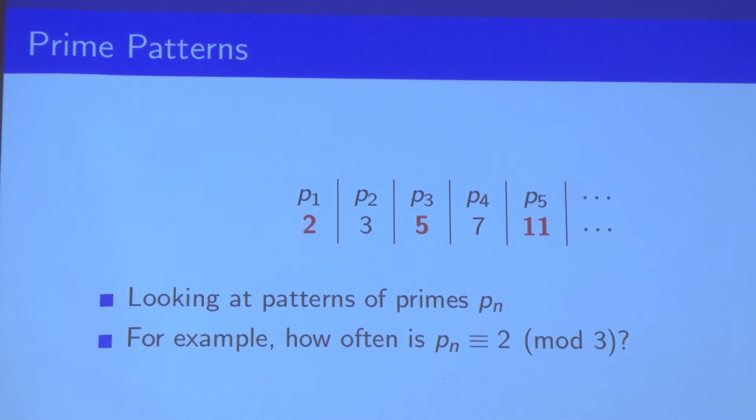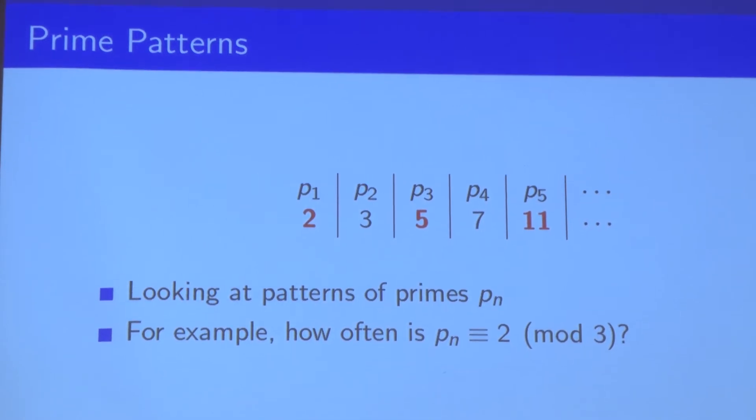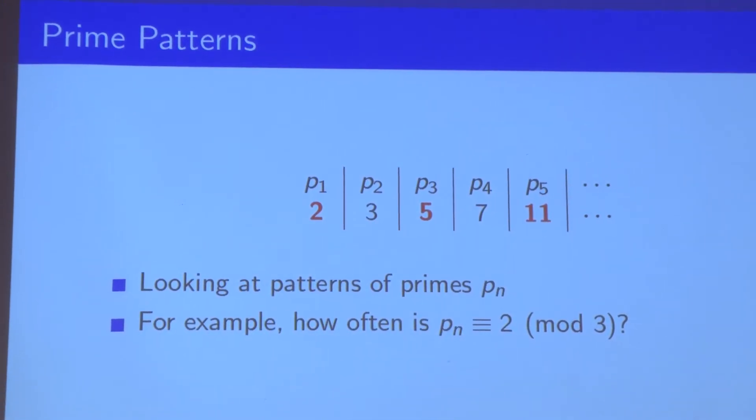The notation P_n is congruent to 2 mod 3 means that when the prime is divided by three, it leaves a remainder of two. Since the only possible remainders are one and two, one might hope that the frequencies of these remainders are roughly equal, so there are roughly equal numbers of primes that leave a remainder of one and two.